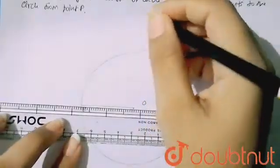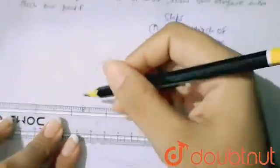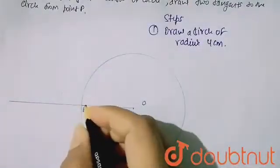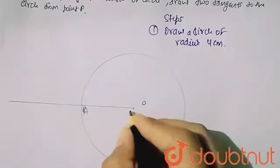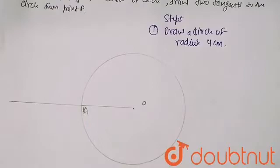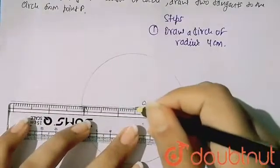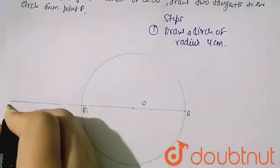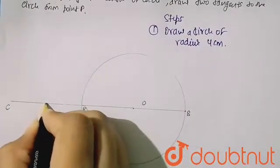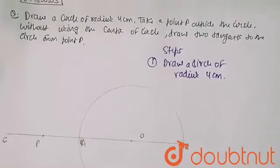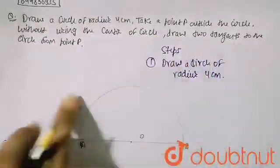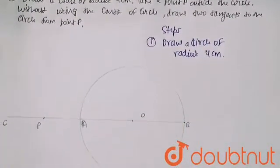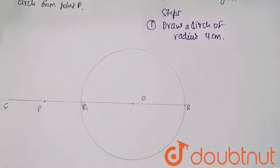I am extending this line more — let's call it C. Take this corner point as B point. And I am extending this line at C, and somewhere here I am taking the point P, because it is written to take a point P outside the circle without using the center of the circle. Now draw 2 tangents to the circle from this point P.